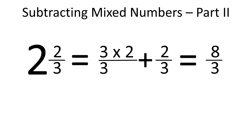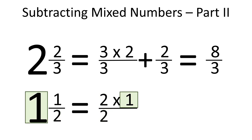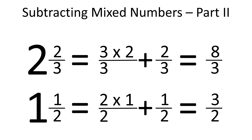Now let's do the same with 1 and 1 half. The whole was divided into 2 parts because there is a 2 in the denominator. So 1 whole is equal to 2 over 2. As we have 1 whole, we multiply the numerator by 1, and then add 1 half. That way, we represented 1 and 1 half as 3 over 2.